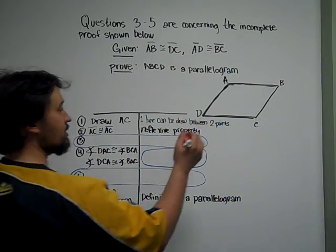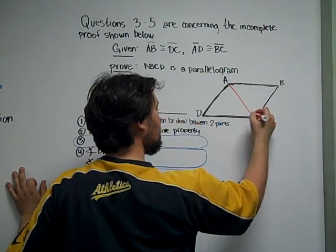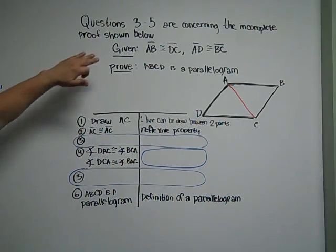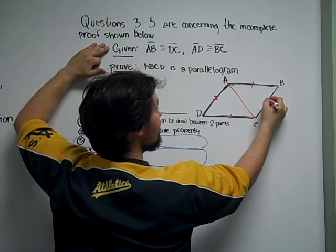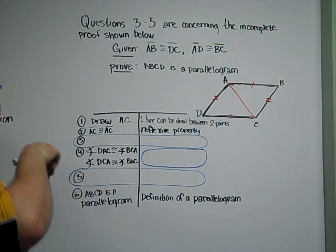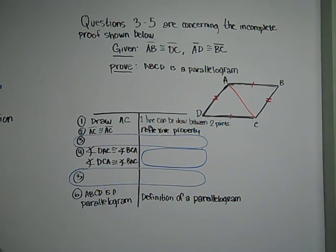So we're told to draw AC, so we're just going to go ahead and draw that to begin with. And I'm just going to note the given stuff from the beginning where AB and DC, AD and BC. So we have two sets of congruent sides.